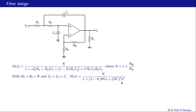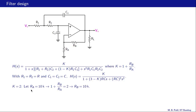At low frequencies we can ignore the terms in s and s² because omega is small, and therefore H(s) becomes simply equal to K. So when we want our passband gain equal to two, we require K equal to two. Let Ra be 10 kΩ; then one plus Rb over Ra equals two, which means Rb and Ra must be equal, so Rb equals 10 kΩ.